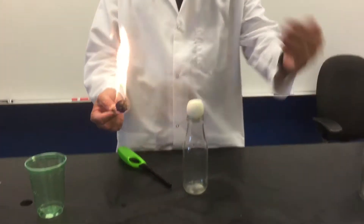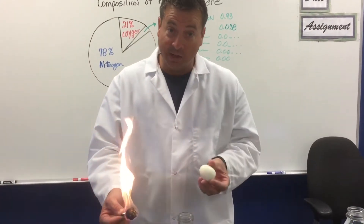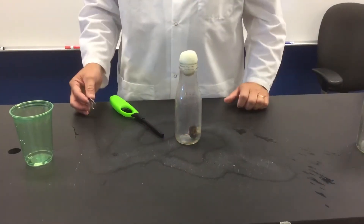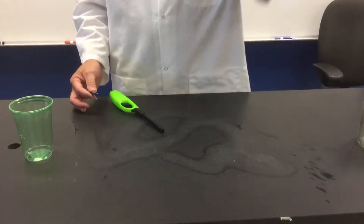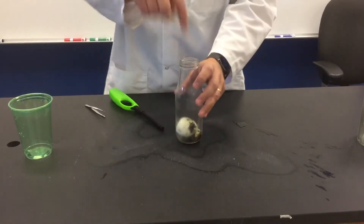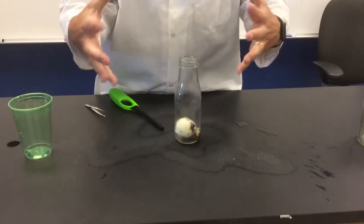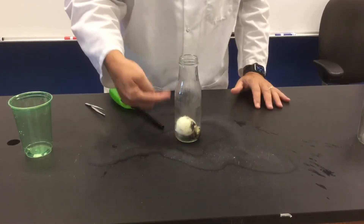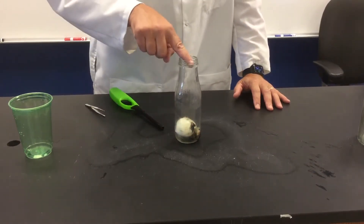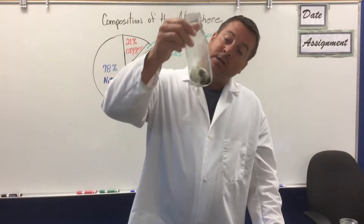The atmosphere on the outside is trying to get in. What's going to happen? The egg is going to interfere. The egg is now inside the jar. Why did it get forced in? Because the atmosphere was trying to fill up that void created by the fire eating away that 21% oxygen. The egg, just like the water, was being pushed by the atmosphere into the jar.